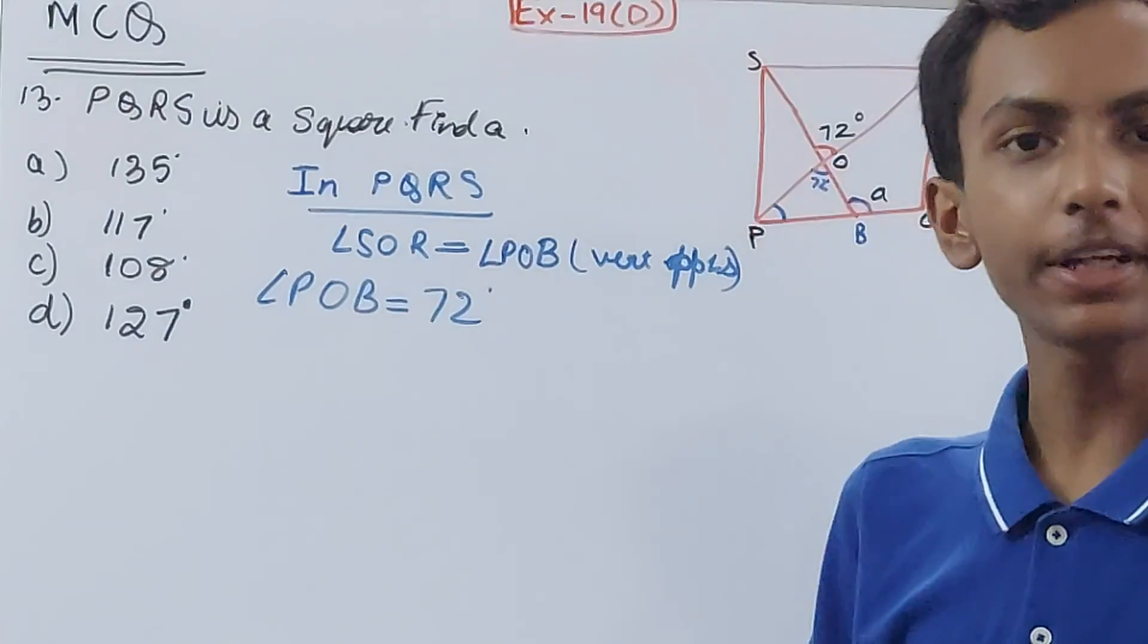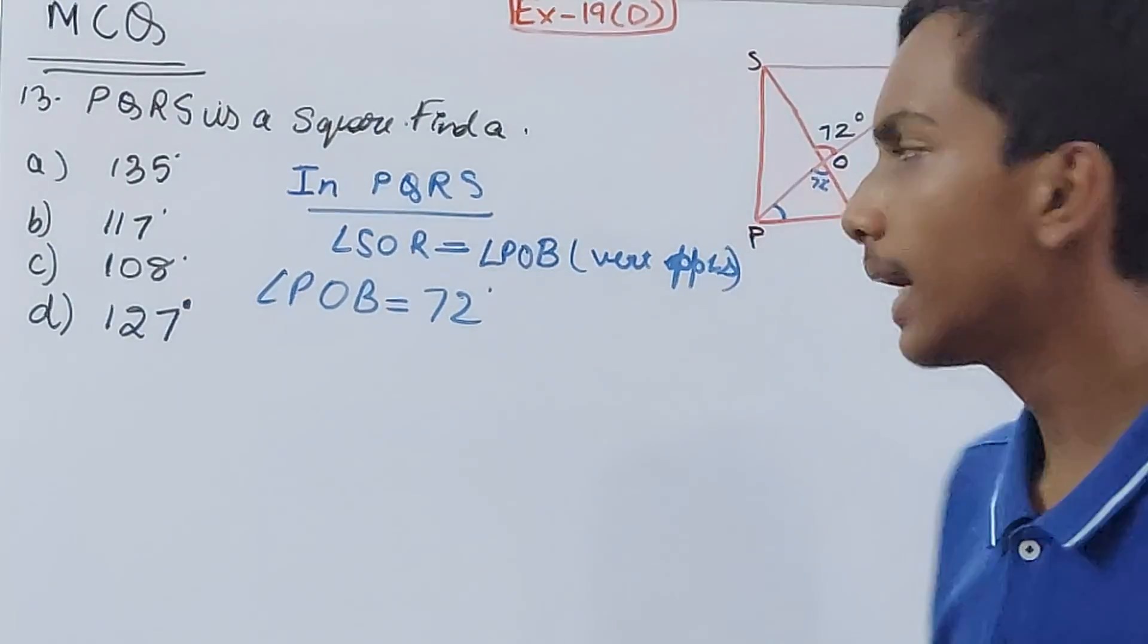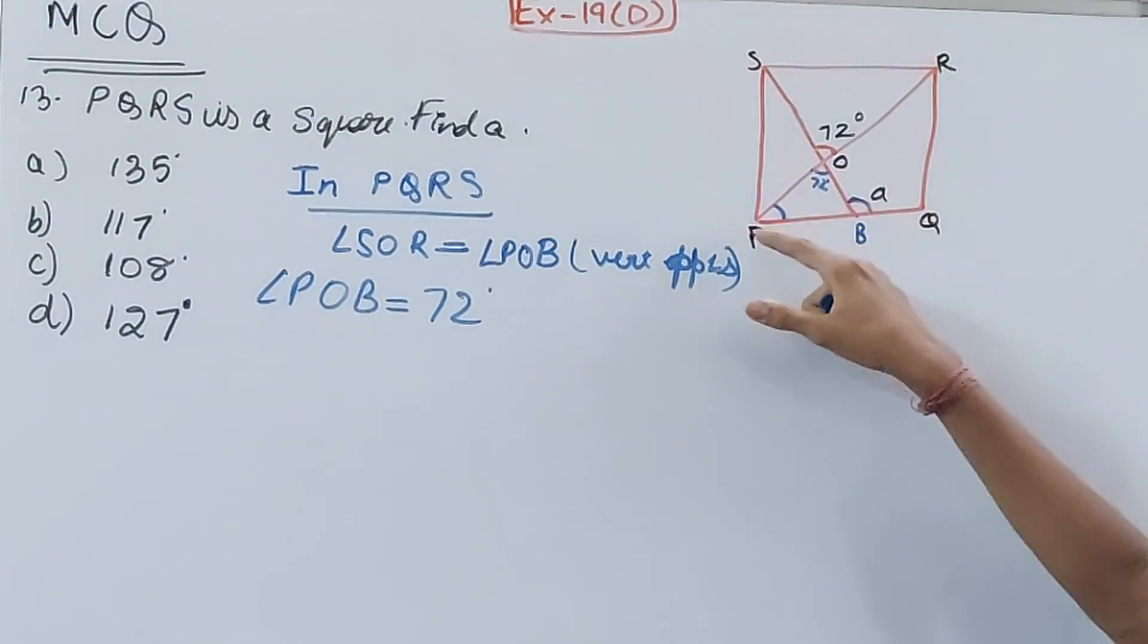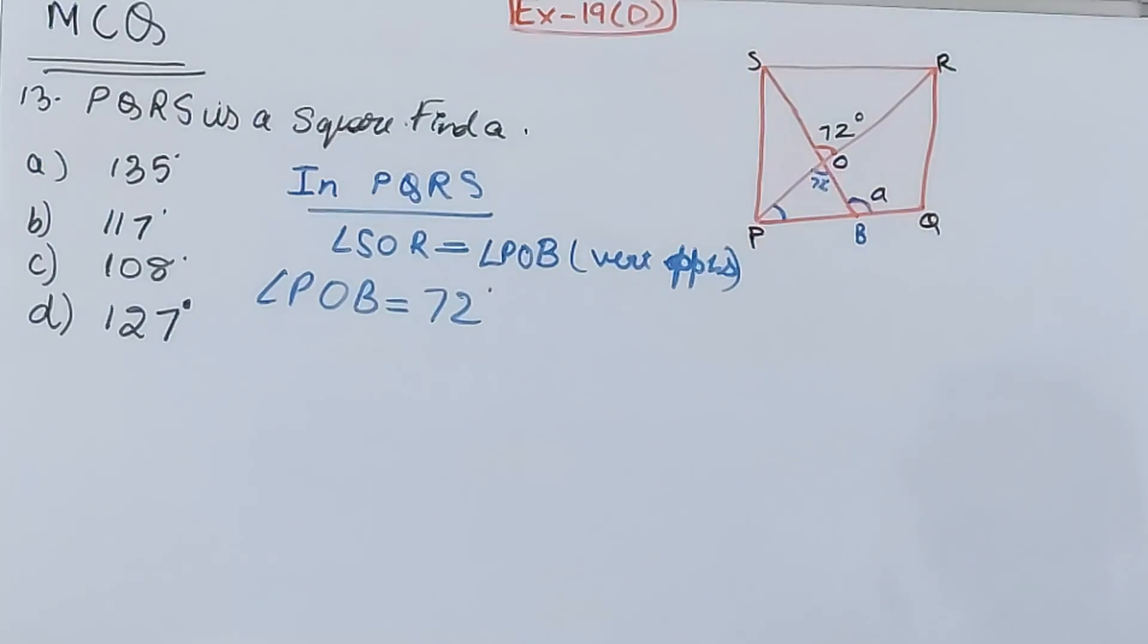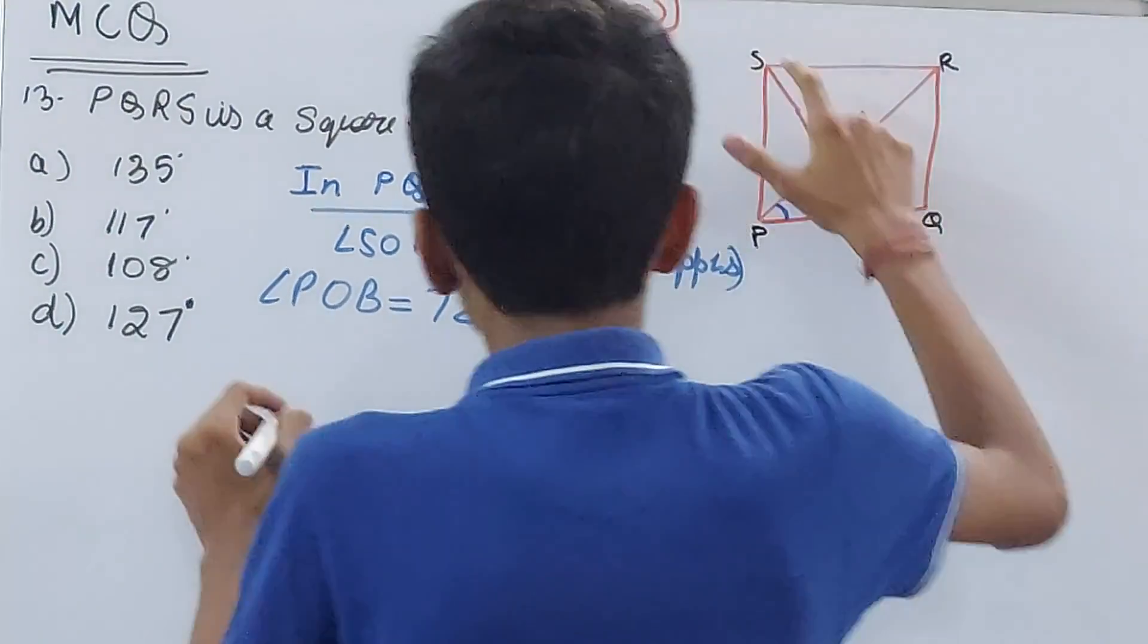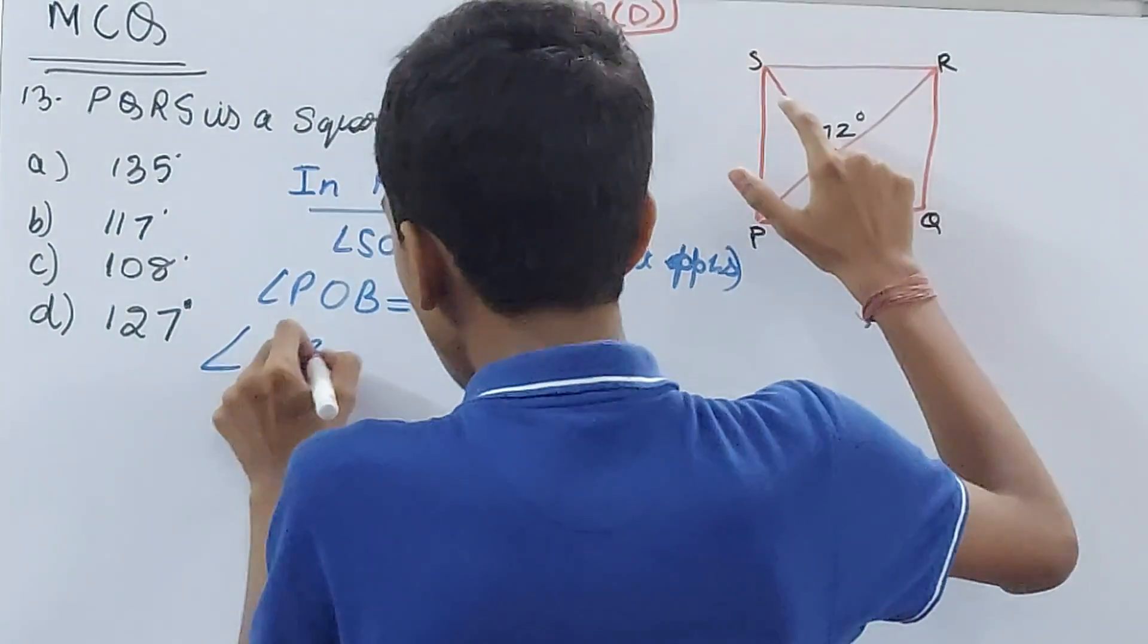So a is the sum of its two opposite interior angles. That means a is the sum of angle POB and OPB. POB I already know. OPB I have to find. How? Let's see.